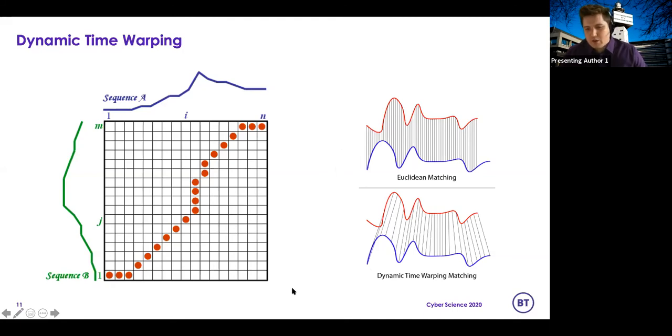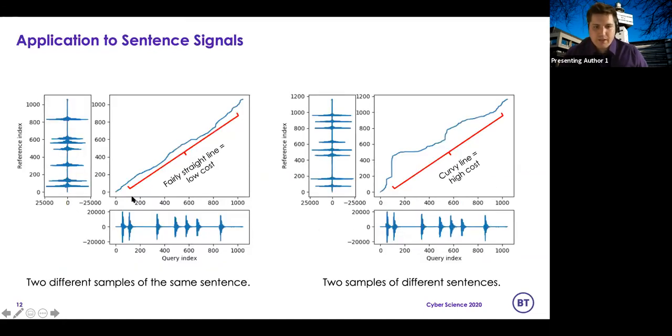And what happens is you take one signal and you compare each point on that signal to the corresponding point on another signal. And when you do that, you generate a cost for every single point and the distance between two signals, allowing you to quickly and easily compare. So two perfectly identical signals will have a linear line straight upwards, whereas two different signals will be much more curvy with a higher cost.